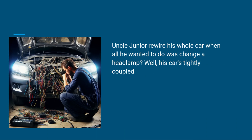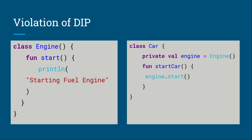Uncle Junior rewires his whole car when all he wanted to do was change a headlamp — his car is tightly coupled. Looking at a code example of a DIP violation: we have an Engine class with a function that starts fuel. Inside the Car class, we create a variable called engine and use it to start the engine. Whenever we change the Engine class, since it's a concrete implementation, we also have to change the Car class. This violates the Dependency Inversion Principle because the Car directly depends on a concrete implementation of Engine.